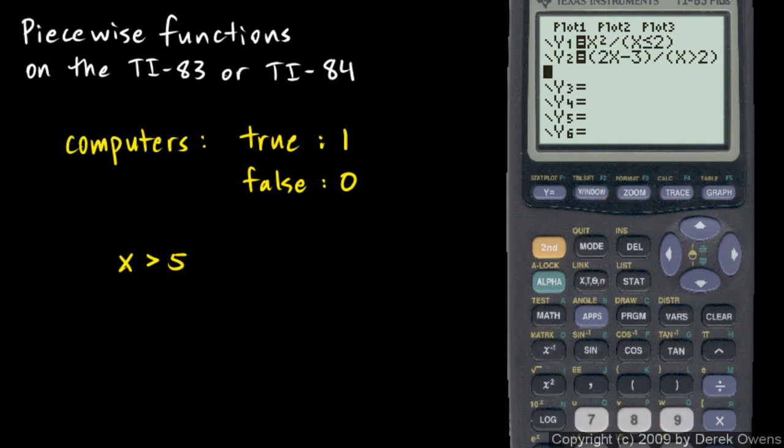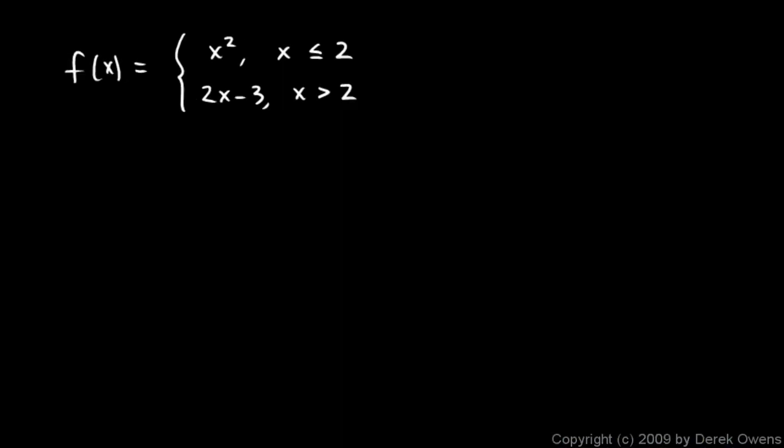Now what we've put in here is a piecewise function. This is the function f of x is x squared, if x is less than or equal to 2. And 2x minus 3, if x is greater than 2.